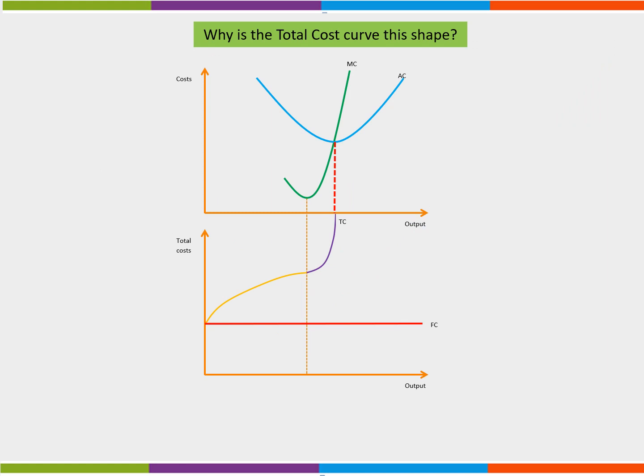So why is the total cost curve this shape? This diagram is an essential element of the Economist Toolkit and can be used to illustrate cost curves for a range of market structures such as perfect competition, monopolistic competition, oligopoly and monopoly. It is an amalgamation of some of the curves we have already looked at in this presentation.